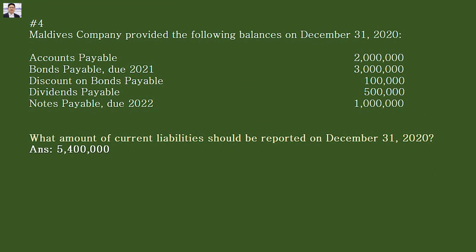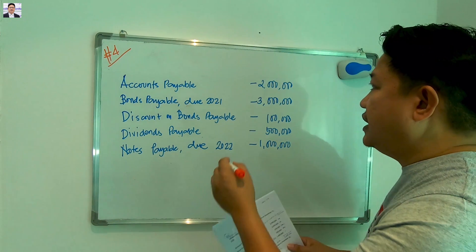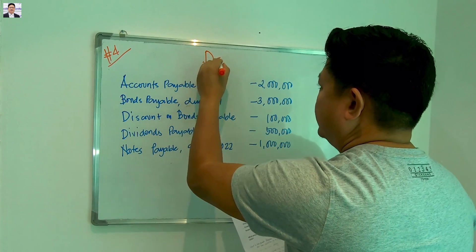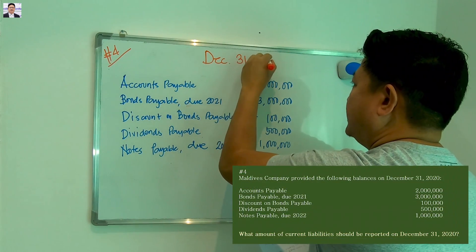The requirement for problem number four is: what amount of current liabilities should be reported on December 31, 2020? So the statement date is December 31, 2020.